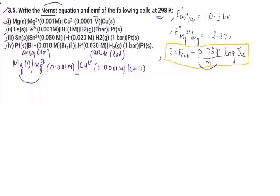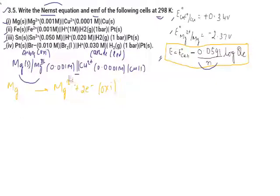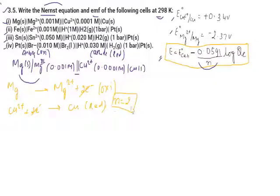First, we remove the number of electrons and write the cell reaction. On the anode, oxidation occurs — Mg loses two electrons to form Mg²⁺. At the cathode, the copper ion gains two electrons and is reduced to copper metal. So N = 2 electrons.